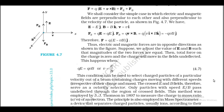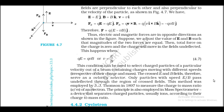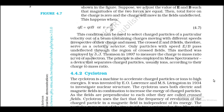This condition can be used to select charged particles of a particular velocity out of a beam containing charges moving with different speeds, irrespective of charge and mass. The crossed E and B fields serve as a velocity selector — only particles with speed v = E/B pass undeflected. This method was employed by J.J. Thomson in 1897 to measure the charge-to-mass ratio e/m of an electron. The principle is also employed in a mass spectrometer, a device that separates charged particles (usually ions) according to their charge-to-mass ratio.